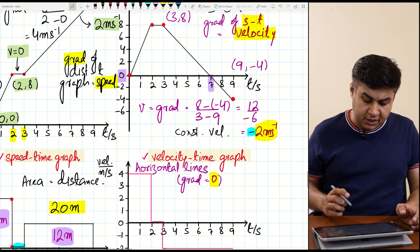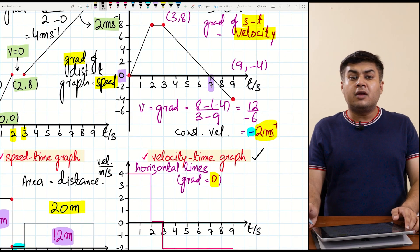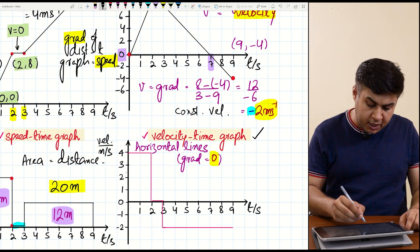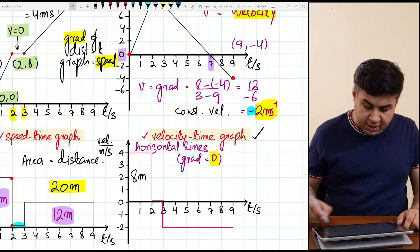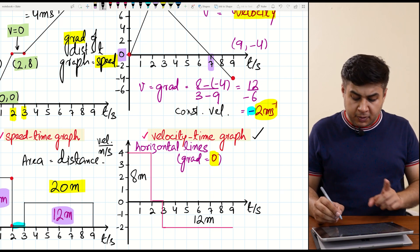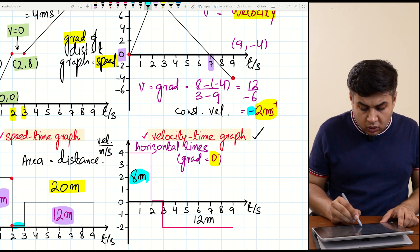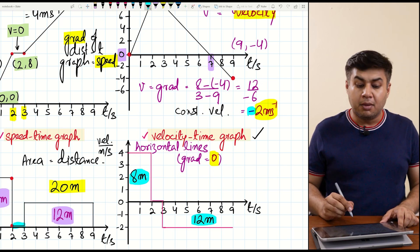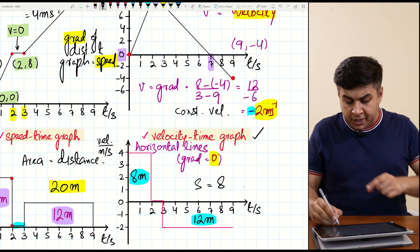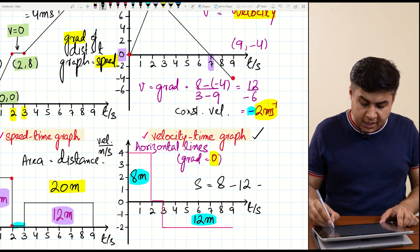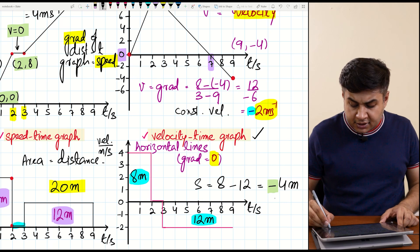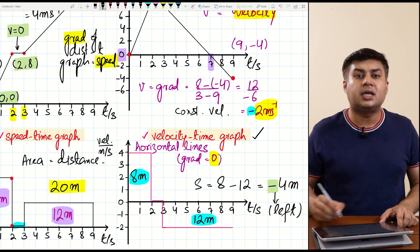The area under the velocity-time graph gives you the value of displacement. For the first part, area is 2 multiplied by 4, which is 8 meters. For the last part, area is 6 multiplied by 2, which is 12 meters. To find the net displacement, subtract the area below the x-axis from the area above it: 8 minus 12 equals minus 4 meters. The minus sign shows he is ending his journey at the left side of his starting point. Similarly, area under the speed-time graph gives total distance traveled.